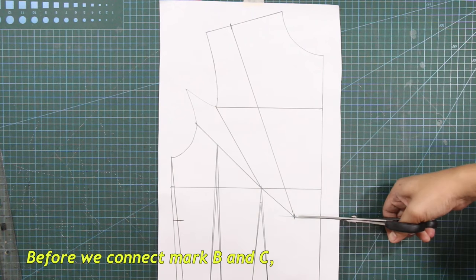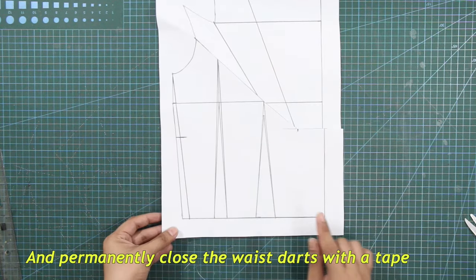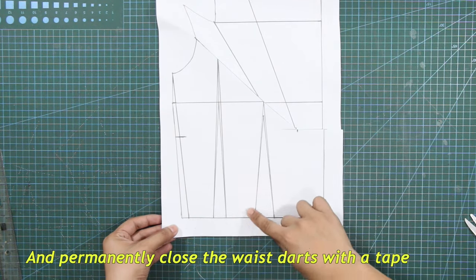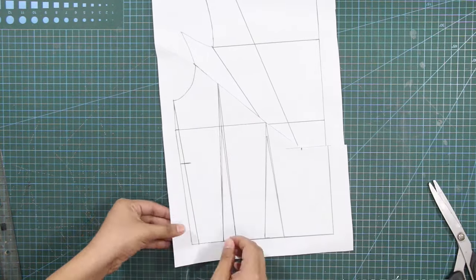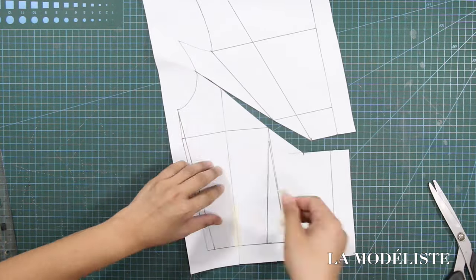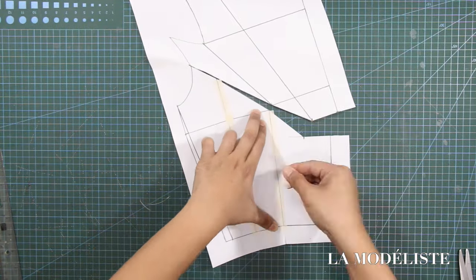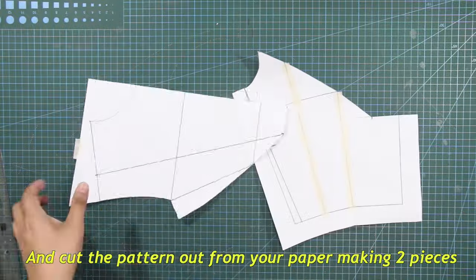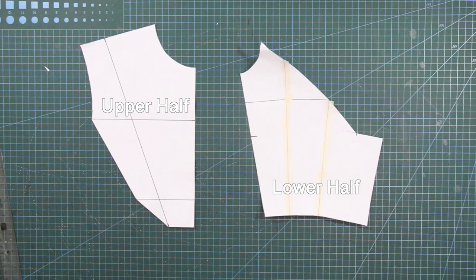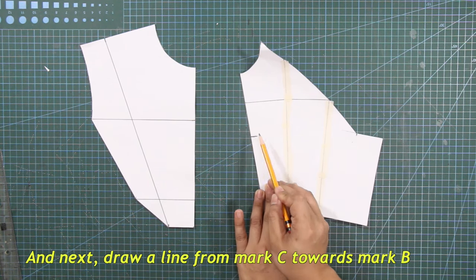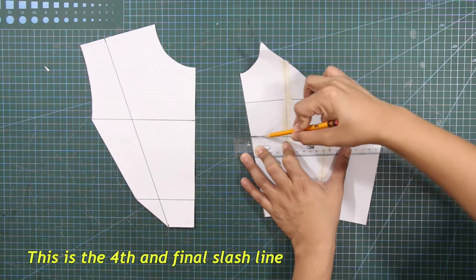Before we connect mark B and C, cut through the slash lines at the armhole bust dart and permanently close the waist darts with tape. And cut the pattern out from your paper, making two pieces. And next, draw a line from mark C towards mark B. This is the fourth and final slash line.